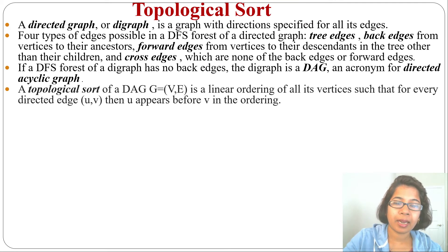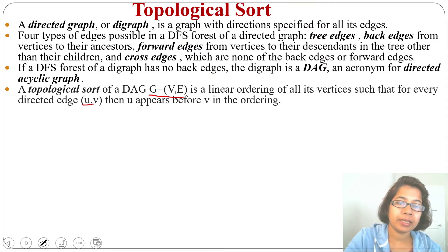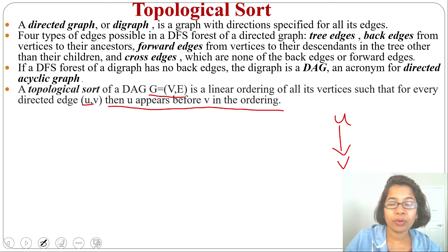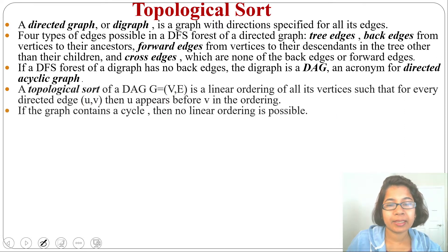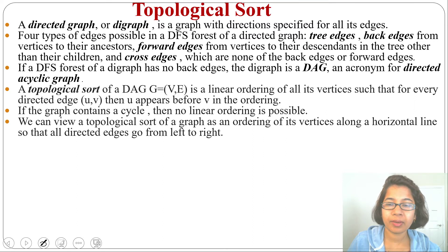A topological sort of a DAG G = (V, E) — G for graph, V for vertices, E for edges — is a linear ordering of all its vertices such that for every directed edge (U, V), U must appear before V in the ordering. If the graph contains a cycle, then no linear ordering is possible. So for topological sort, the first condition is the graph should be a DAG — directed acyclic graph. We can view a topological sort of a graph as an ordering of its vertices along a horizontal line so that all directed edges go from left to right.